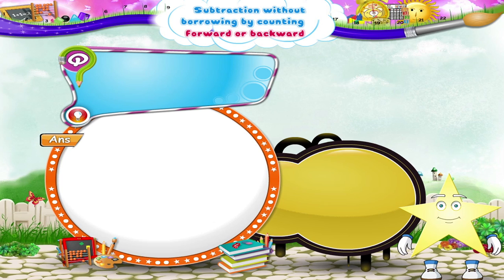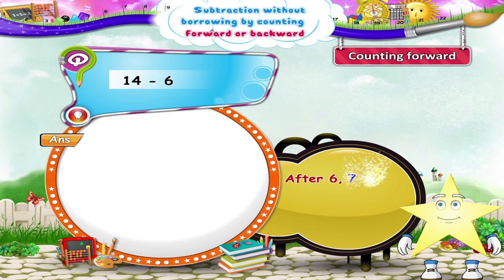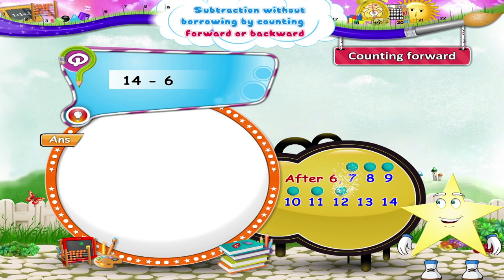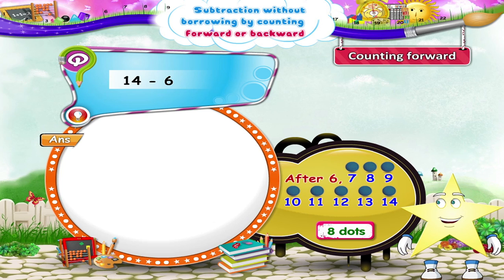Did you understand both the methods, Starry? Ok. Then let's solve a few examples. Subtract 14 minus 6 by counting forward. What shall we do Starry? Yes. We shall count forward after 6 till we reach the number 14: 7, 8, 9, 10, 11, 12, 13, 14. How many dots have we drawn? Yes, 8 dots. So, 14 minus 6 equals 8.